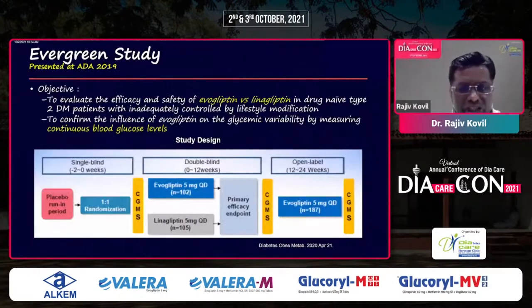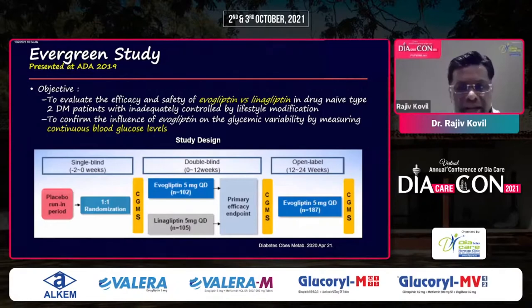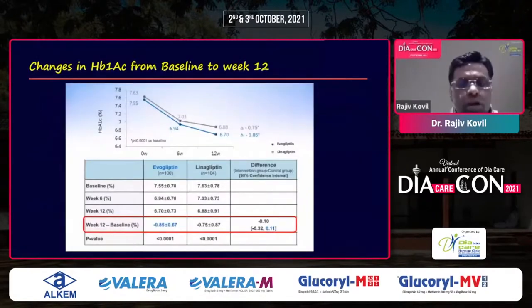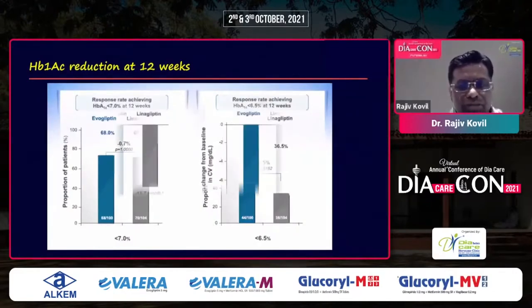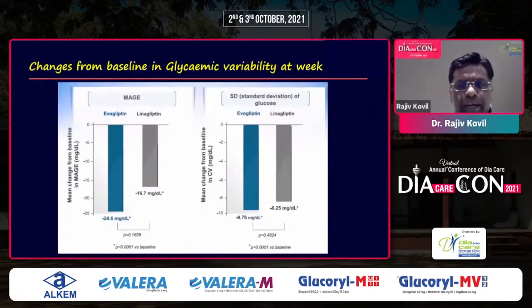The Evergreen study, presented at the ADN 2019, looked at CGM data. At 12 weeks, HbA1c reduction was numerically better with evogliptin compared to linagliptin. More patients reached the goal with evogliptin compared to linagliptin, whether the target was 7 percent or 6.5 percent.